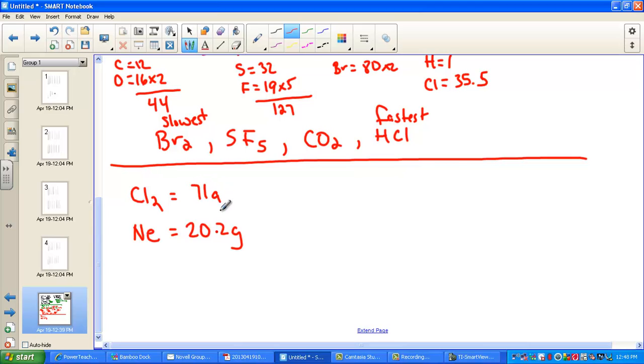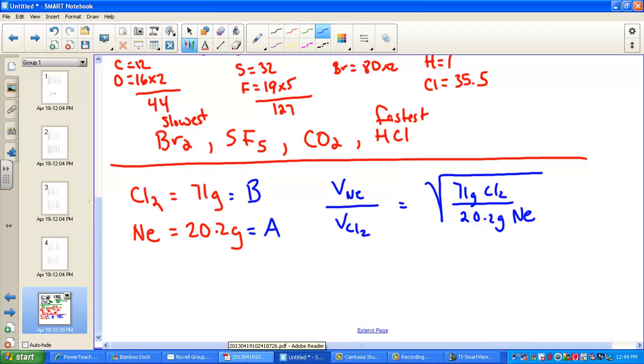Neon has a molar mass of 20.2. Chlorine is 35.5, but double that and we'll have our 71 grams for the molecule of Chlorine. I understand now that this Chlorine, which is heavier, will be called gas B, and Neon, which is lighter, is now gas A. The ratio of the lighter gas to the heavier gas is equal to the inverse of the molar mass of heavy over light. So 71 grams of Chlorine placed over 20.2 grams of Neon.